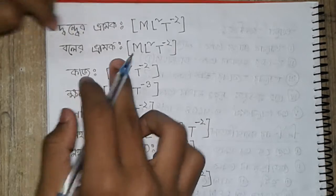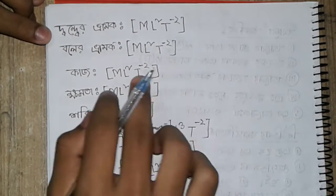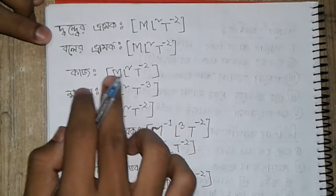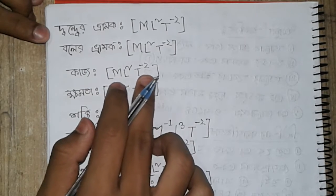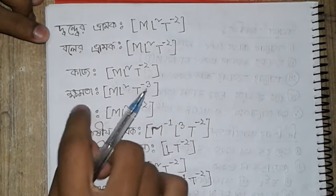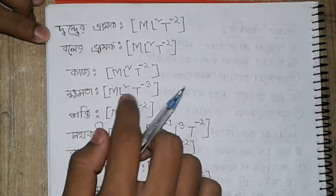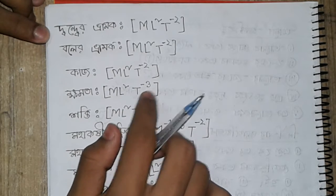This gives us ML square T inverse two for work, and the dimensional formula is ML square T inverse three.